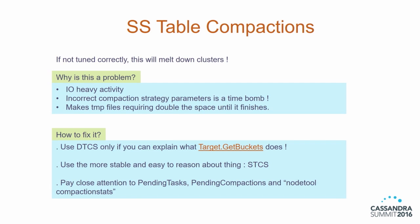Compactions don't require any introduction to this audience — they are very IO heavy, and if you don't set the compaction strategy parameters correctly, it's just a time bomb and at some point the whole cluster will melt down. One tidbit: as compactions run, they make temp files, so you will actually need more disk space than you think. We recommend using STCS — size-tiered compaction — only if you can explain what the target class and get buckets method does. We use size-tiered because it's easier to reason about how many SS table files will exist on your disk. Pay close attention to metrics like pending tasks, compaction stats, and node tool compaction tasks.